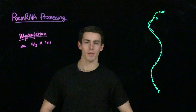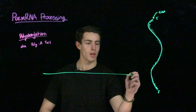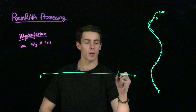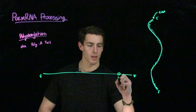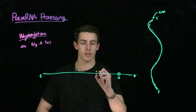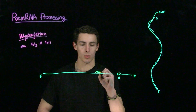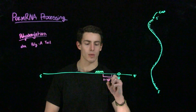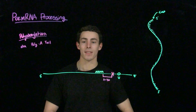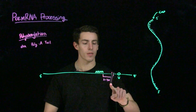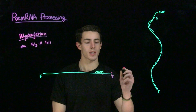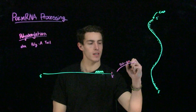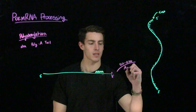In our freshly transcribed mRNA molecule, we're going to have a few important landmarks. Near the 3' end, we are going to have a U-rich segment. We are also going to have an important consensus sequence called the AAUAA sequence. Roughly 11 to 30 nucleotides downstream from this AAUAA consensus sequence, we're going to have a cleavage site. At this cleavage site, enzymes will come in and cleave off the 3' end of this transcript. After we cleave this 3' section, we are going to add a segment of roughly 50 to 250 adenosine bases.